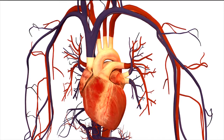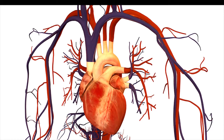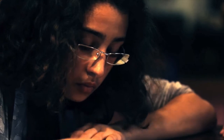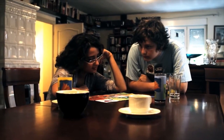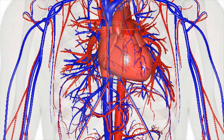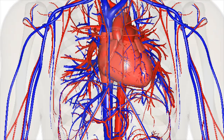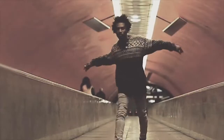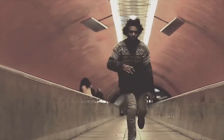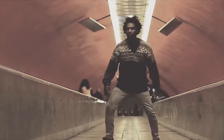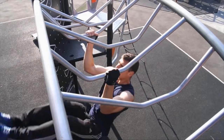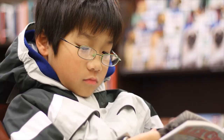A healthy circulatory system is also important for a healthy mind. The brain uses 25 percent of the energy we consume, so keeping a healthy cardiovascular system to deliver that energy is very important.